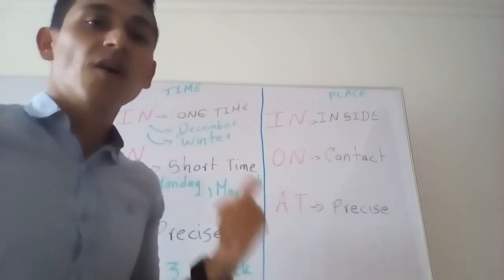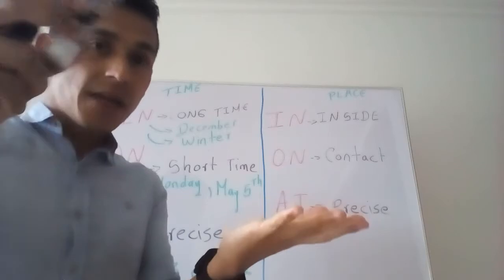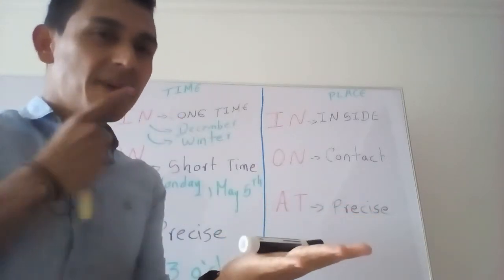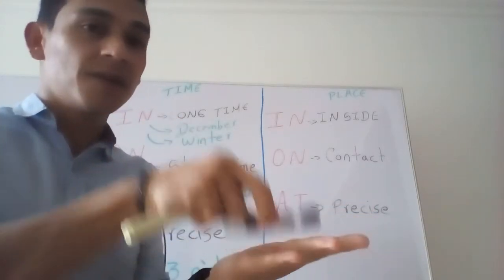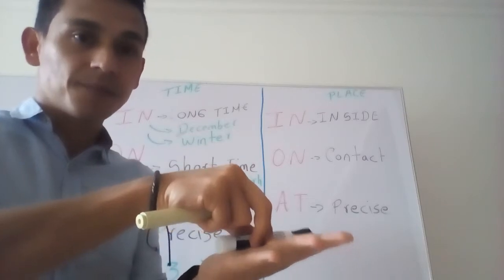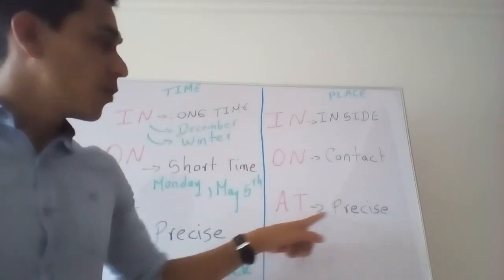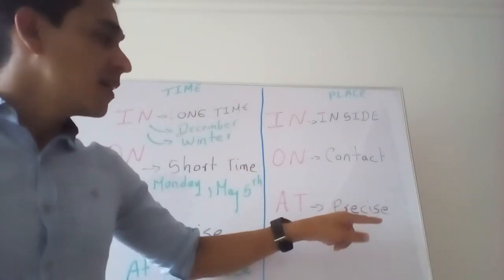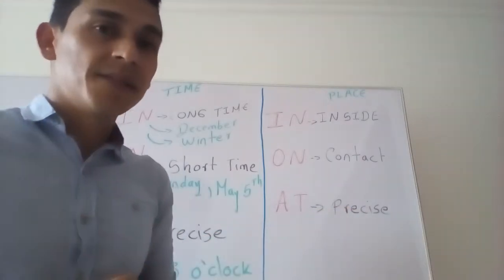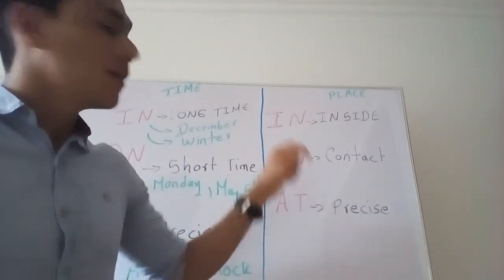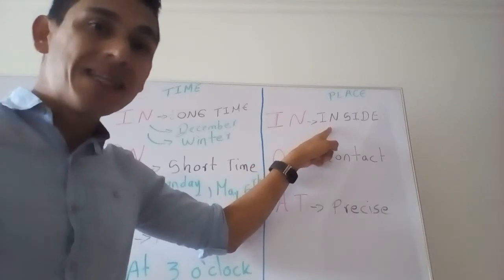For example, the marker — we say 'on my hand' because it has just contact. And 'at' is when we precise a place. Let's practice: 'I am in the room, in the classroom' — that's inside. 'On the second floor' — that's contact with a surface.